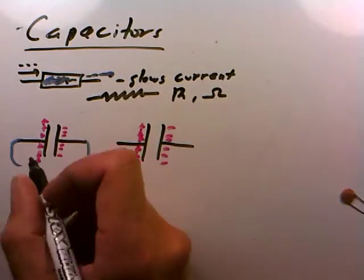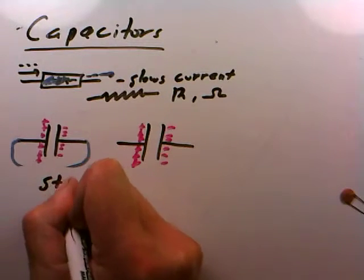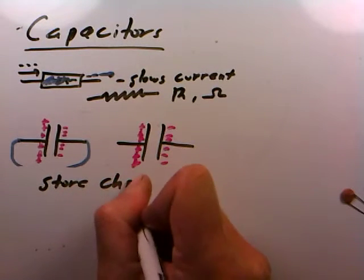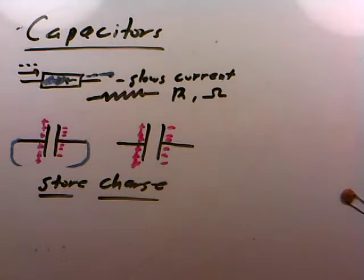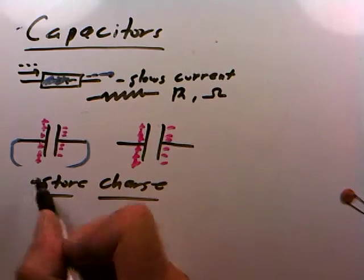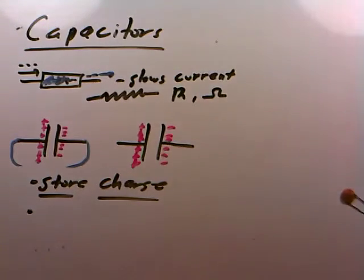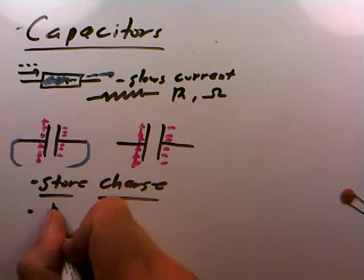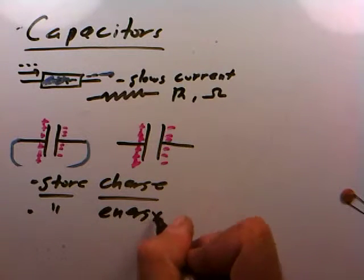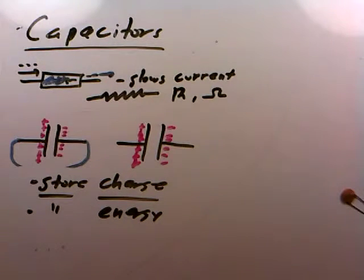If resistors slow current, capacitors store charge. Now I can't say they store current because nothing's really flowing except during that charging process. But when they're all done, they store charge. It might be a little bit of a misnomer to say store charge because there is no net charge on the capacitor. It's okay to think of them that way, but it might be better to say that they store energy, and the energy is stored in terms of this charge which has become separated. But we won't worry too much about that. For now we'll just say that capacitors store charge.